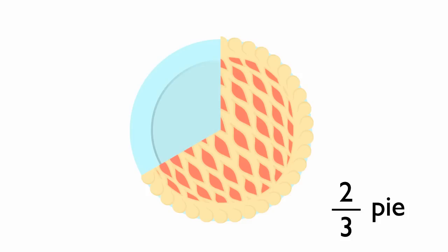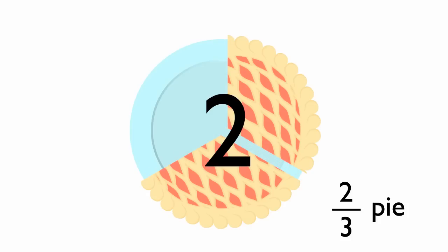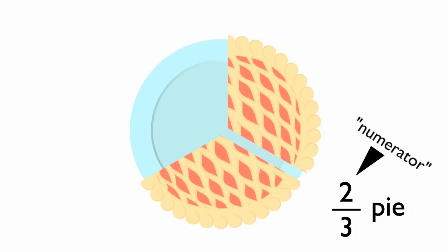This is two-thirds of a pie. There are two slices left. That number becomes the numerator. That's the number on top.